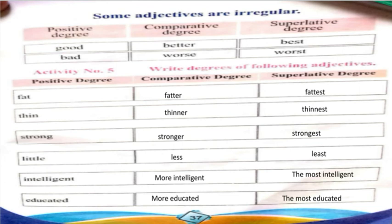The Hottestown Textbook Board Quetta. Some adjectives are irregular: Positive Degree, Comparative Degree, and Superlative Degree.